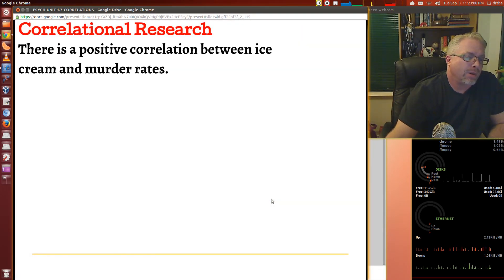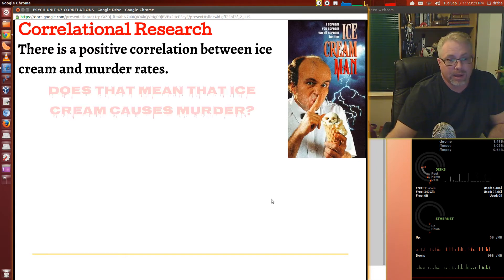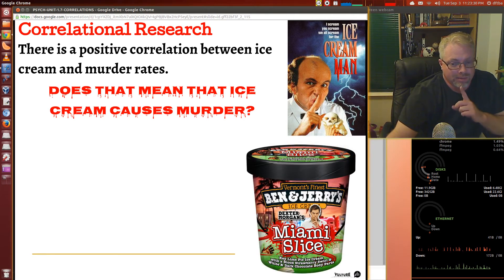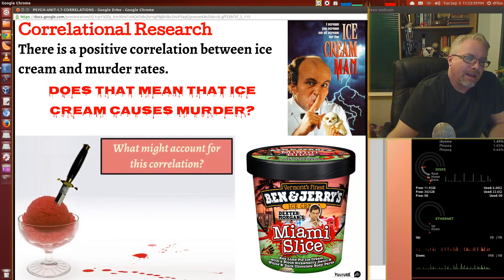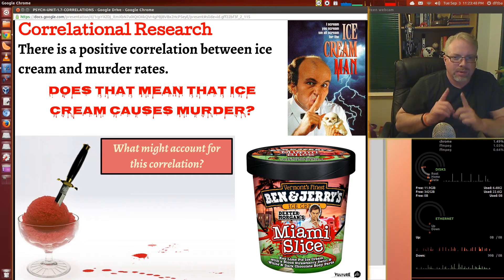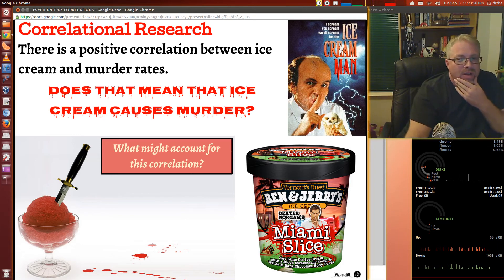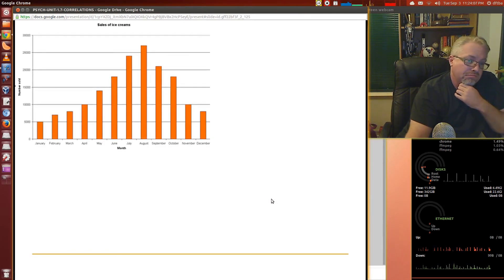Correlational research. There is a positive correlation between ice cream and murder rates. What does this mean? Does that mean that ice cream causes murder? It doesn't. What might account for the correlation here? Why would murder rates and ice cream sales be positively correlated? And they are. Write that down in your notes. Bring that to class and we'll talk about it if you're uncertain. These are sales of ice cream by month. What's the highest month? August. The lowest months? January and December.